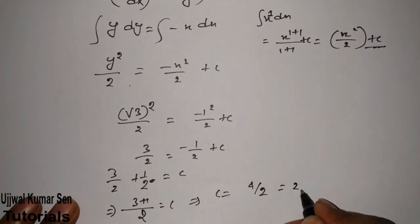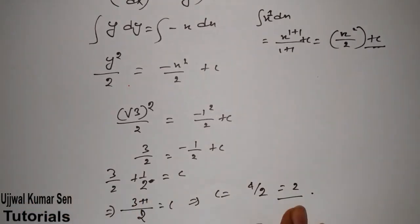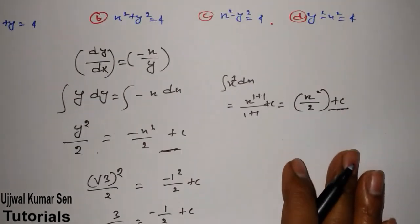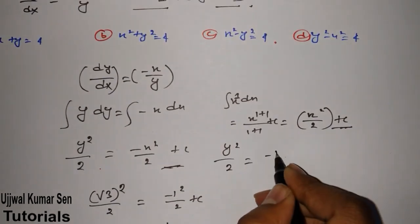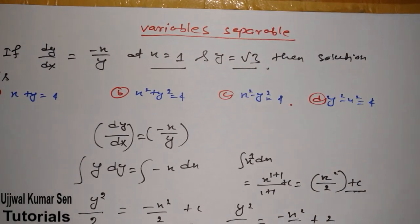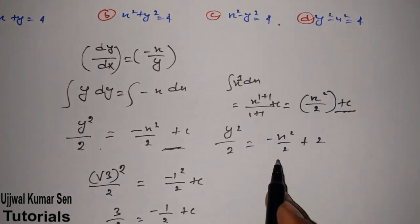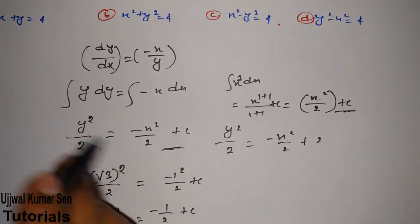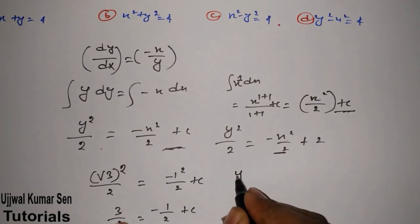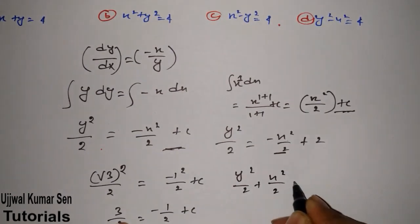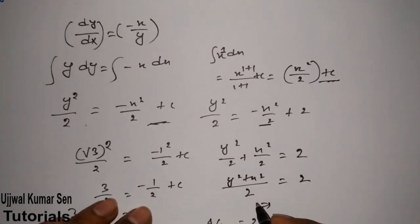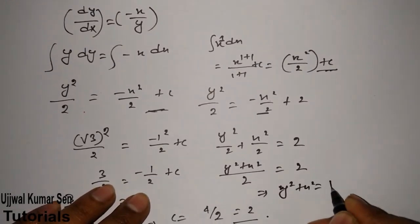After getting the LCM, 3 + 1 = 2c, therefore c = 4/2 = 2. Now substituting c = 2 back into the equation gives y²/2 = -x²/2 + 2. None of the options match directly so we simplify further: y²/2 + x²/2 = 2. Taking the LCM: y² + x² = 4.